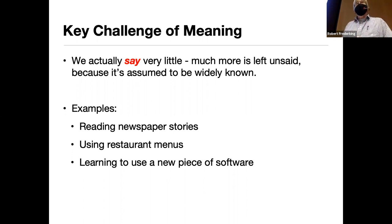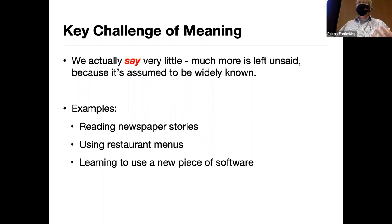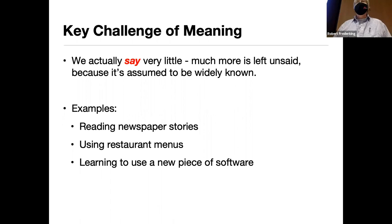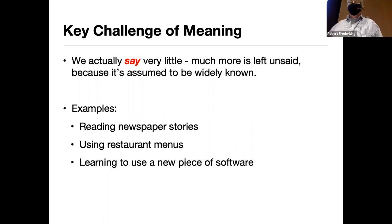Similarly, in a restaurant you get a sheet of paper with descriptions of food and money amounts, but they don't tell you that you have to pay for food, what food is, or how to eat. There's all these things not listed on the menu. And a programming manual tells you how to use software but assumes you already know what programs and computers are. Early in AI history, someone thought children's stories would be easier, but actually they're much harder than adult newspaper content because all the weird stuff — trees talking, people flying on carpets — is just okay.